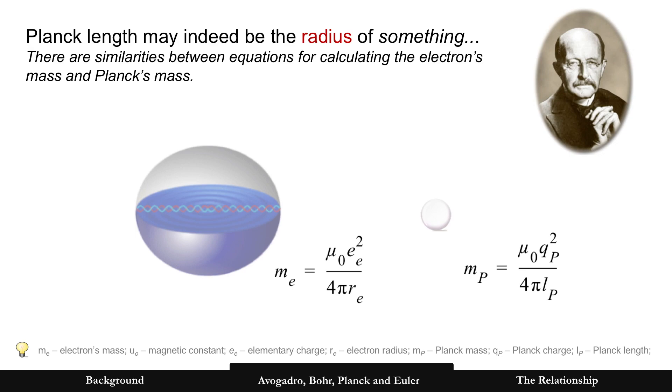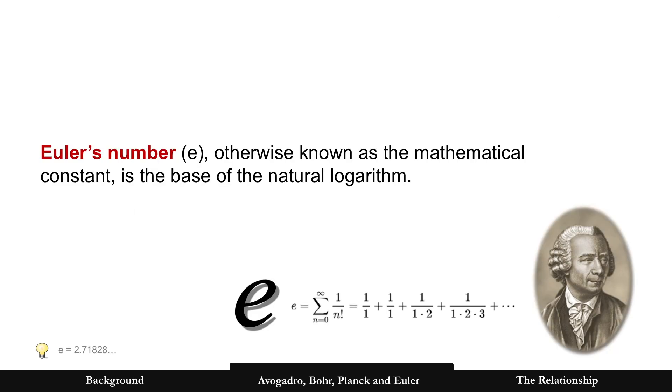All right, but why did I use a radius as the length? Well, Planck length may indeed be the radius of something because here are some similarities. Now on the left you can calculate the mass of the electron. It's based on the magnetic constant elementary charge and the electron's radius. And on the right now you see some of the other Planck units, the Planck mass and the Planck charge. But you can see circled there in red is the electron radius and the Planck length. So perhaps it is indeed a radius.